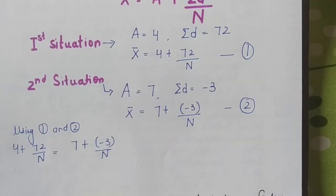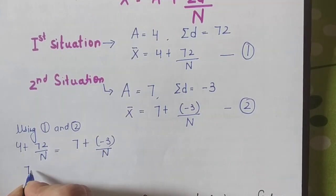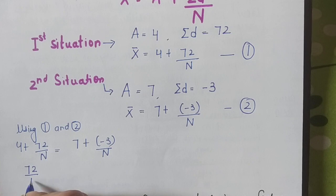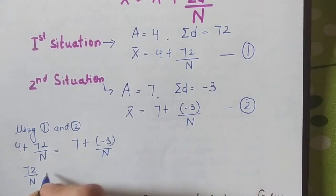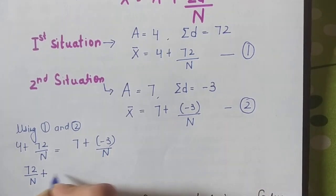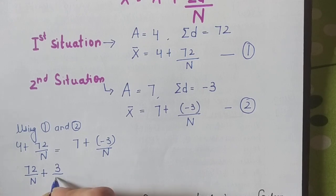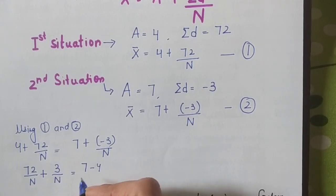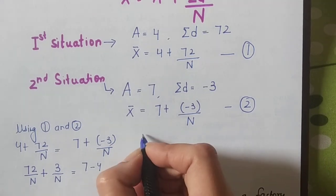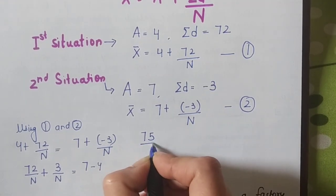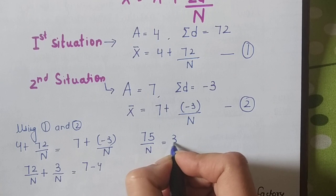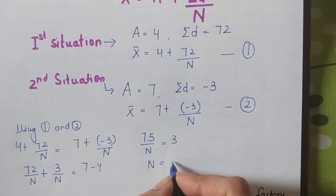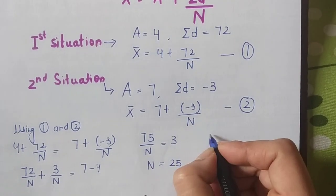Since both equations tell the figure of mean, using equations 1 and 2, I can say that 4 + 72/n = 7 + (-3)/n. So 72/n + 3/n = 7 - 4. Therefore 75/n = 3, or you can say that n = 25.